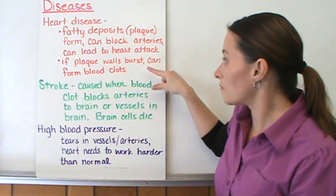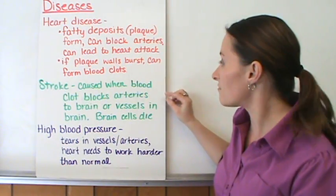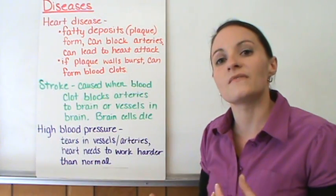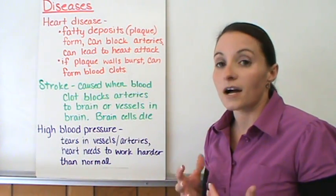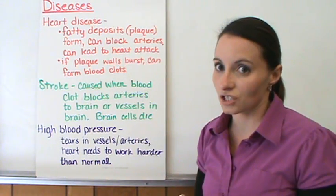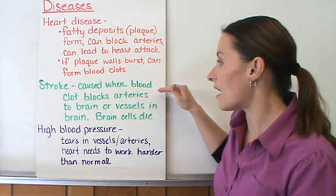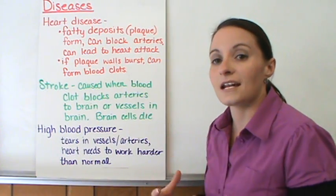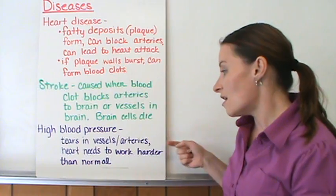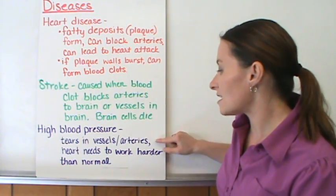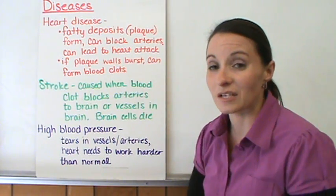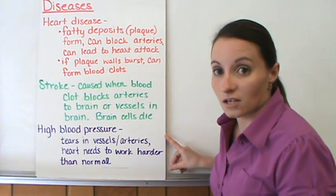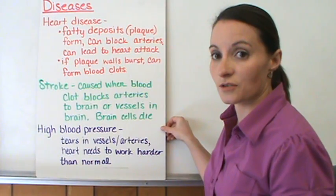Another issue caused by blood clots is a stroke. If a blood clot forms and blocks the arteries to the brain or the vessels within the brain, brain cells die because they're not getting the blood and oxygen they need. The third disease is high blood pressure. If your heart starts working harder than normal, you can get tears in the vessels and arteries, and your heart can stop working because it runs out of energy from constantly pumping.